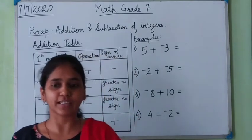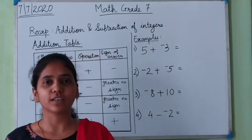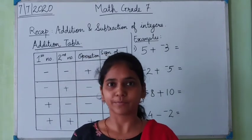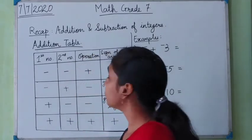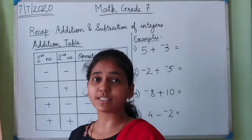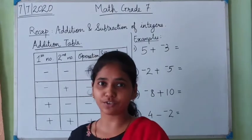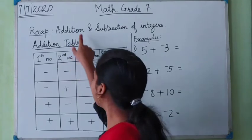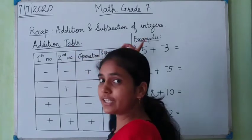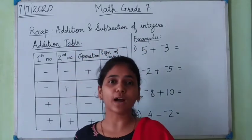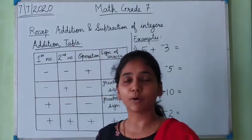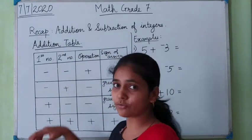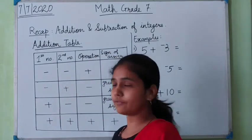So first let us study what you have done previously in your classes. You have started with the first chapter which was number and calculations 1. In that you have done addition and subtraction of integers — how to add and subtract positive as well as negative integers. So we will just have a recap of what you have previously done.